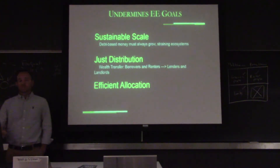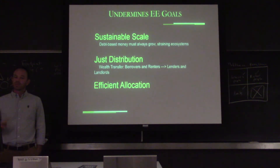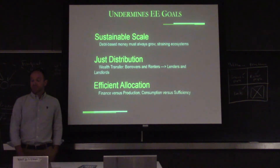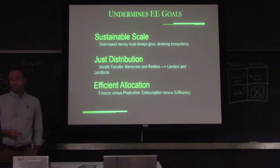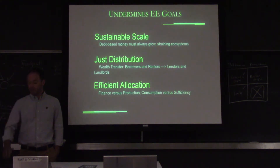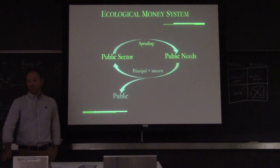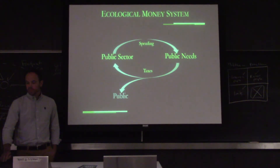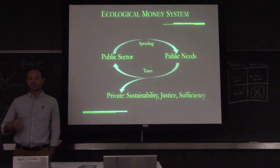This money system creates a wealth transfer from borrowers and renters to lenders and landlords. So if we talk about income inequality and what is driving it, the biggest thing we think is driving that is simply the way money is created and circulated. Then there's the issue of finance versus production — we're putting a lot of money in finance and less in production, and looking at things from a consumptive standpoint as opposed to a sufficiency standpoint. An ecological economics money system would create money through a public sector spending for public needs; that money would be destroyed by taxes to maintain the value of the currency, and what was left could be lent out to the private sector for sustainability, justice, and sufficiency goods.